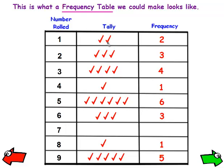These are called tally marks. They could be sticks, they could be check marks, anything you want. And then the frequency — you just add up the tally marks — tells you how often someone rolled a 1, how often someone rolled a 2.